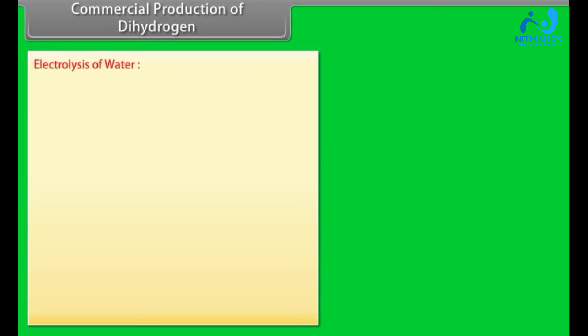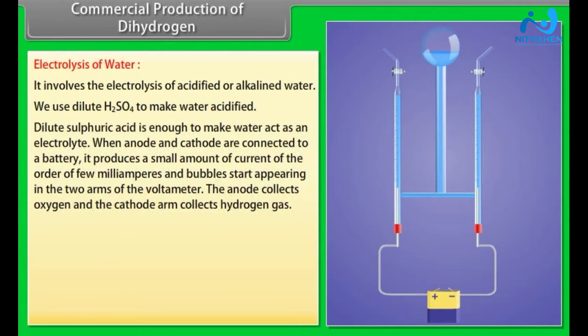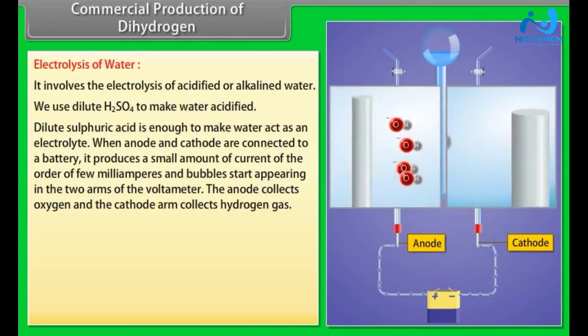Commercial production of dihydrogen. Electrolysis of water. It involves the electrolysis of acidified or alkaline water. We use dilute H2SO4 to make water acidified. Dilute sulphuric acid is enough to make water act as an electrolyte. When anode and cathode are connected to a battery, it produces a small amount of current of the order of few milliamperes and bubbles start appearing in the two arms of the voltameter. The anode collects oxygen and the cathode arm collects hydrogen gas.